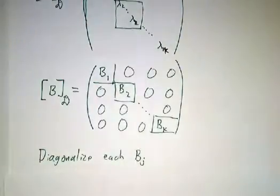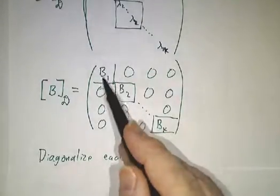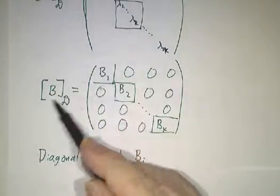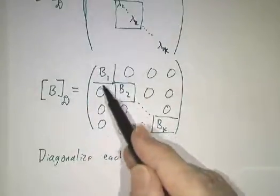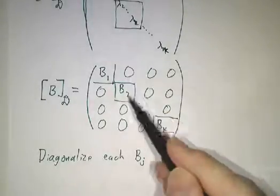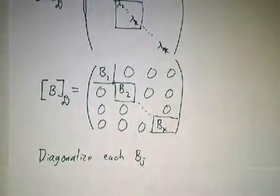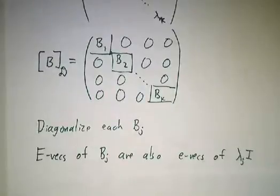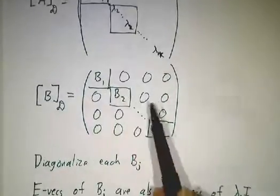And then we diagonalize each block. And if you diagonalize a block, that gives you an eigenvector of this whole matrix. You take the eigenvector of B1 and you pad it with zeros. Or the eigenvector of B2 and you pad it above with zeros and below with zeros.